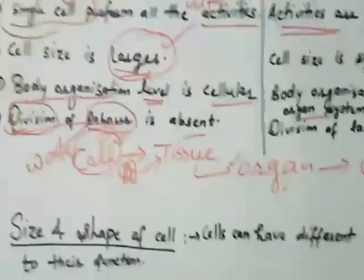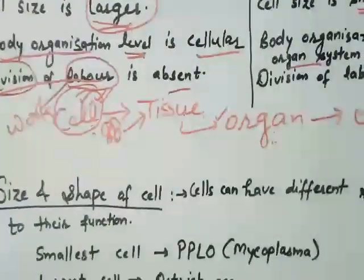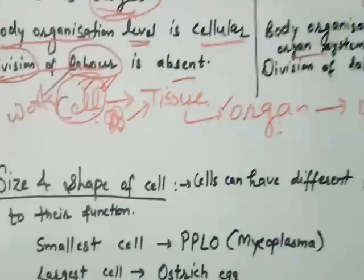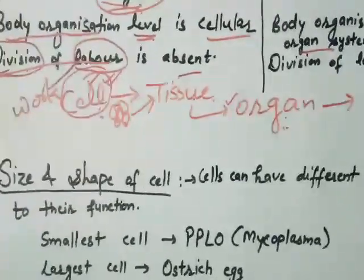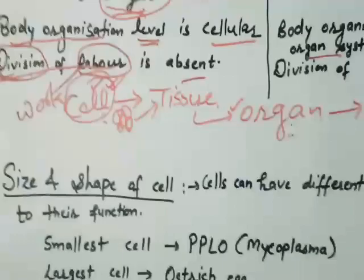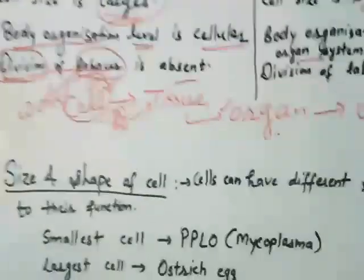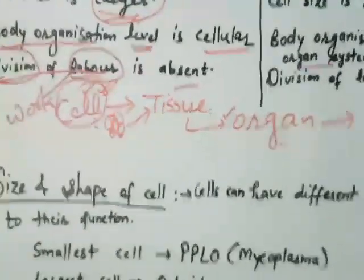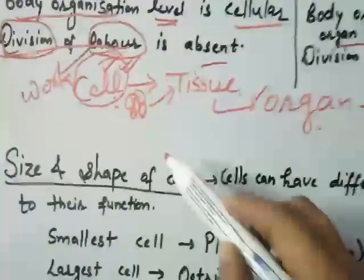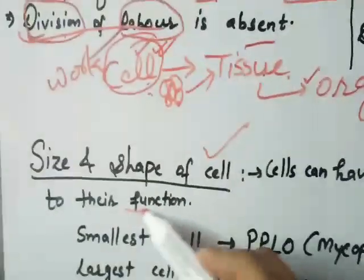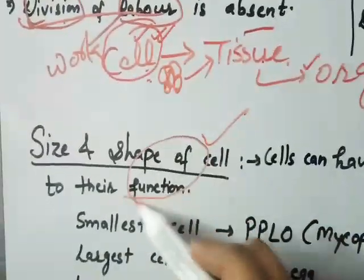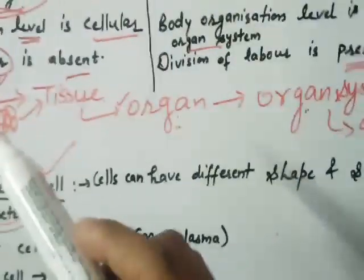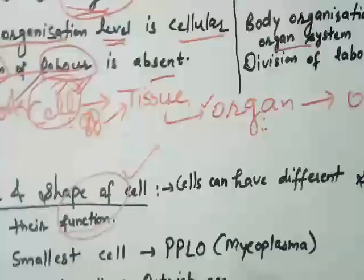After the differences, let's talk about the size and shape of the cell. Since different cells have different functions, the size and shape of a cell depends on its function — the function determines what size and shape the cell will have.